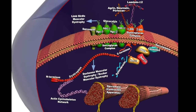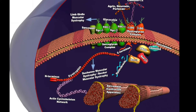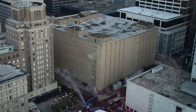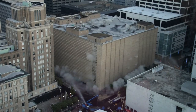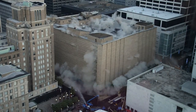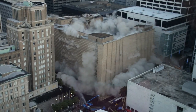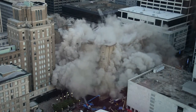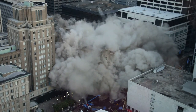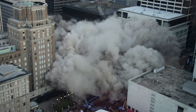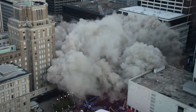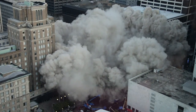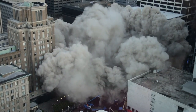Those born with Duchenne muscular dystrophy do not have the dystrophin protein in their muscles, which is basically like having a building without support beams. The muscle fibers become very weak, they lose their structural integrity, and an outflow of important enzymes and other cellular contents occurs through cracks in the protective membrane.